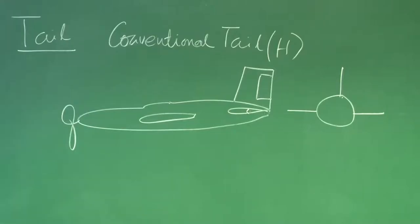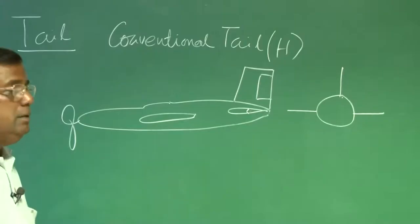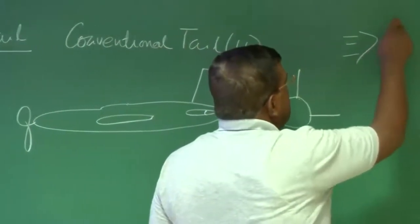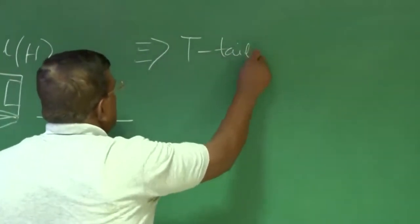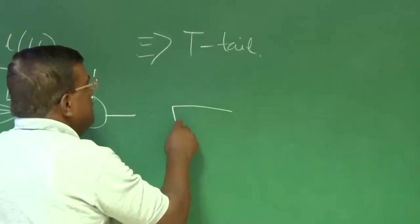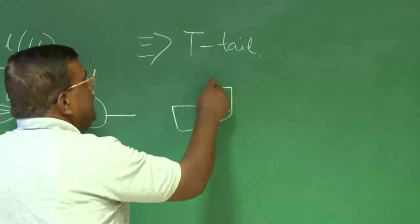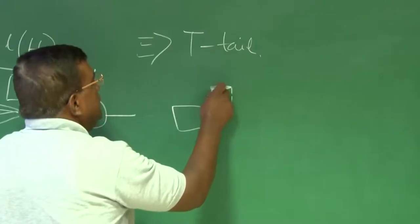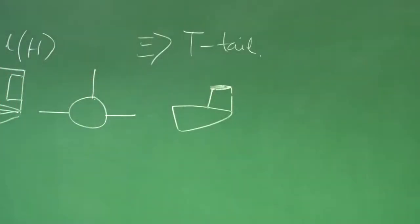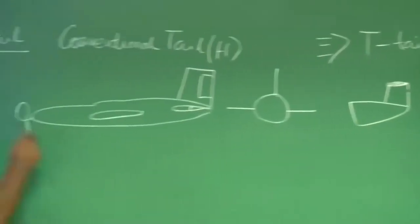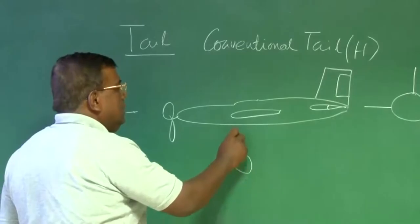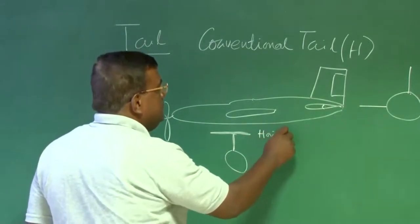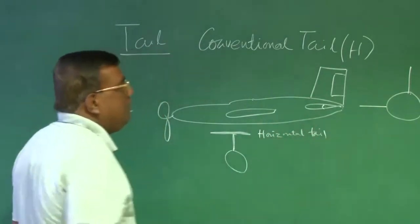You will find among the youth, and also in the design evolution, the stylish tail is the T-tail. If this is my empennage and there is a vertical tail, this horizontal tail will be housed at the top. So from the front view, you will see the vertical tail and over that, the horizontal tail forming a T-shape. You are all familiar with this.